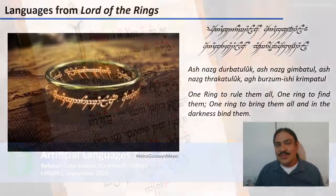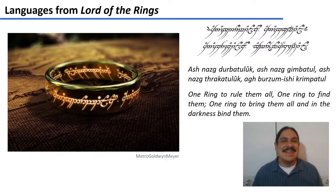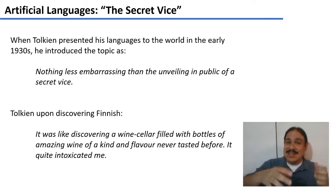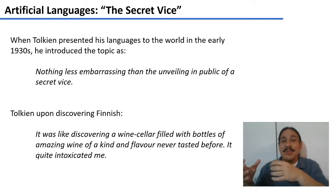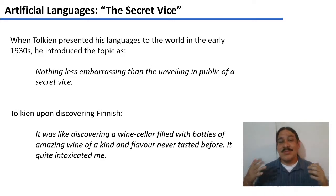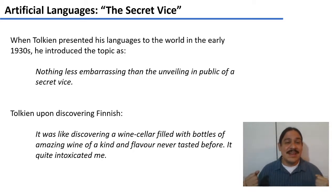I'll show you an example of an artificial or constructed language. 'One ring to rule them all' — by famous nerd J.R.R. Tolkien. Fun fact about Lord of the Rings: Tolkien made the languages first and only then did he design the world so that there would be a place for his languages to exist. He was a bit embarrassed by it, and when he finally revealed the languages in the 1930s he said it was 'nothing less embarrassing than the unveiling in public of a secret vice.' He loved the art of inventing languages, and in particular he loved Finnish. He liked the way it sounded and said it was like discovering 'a wine cellar filled with bottles of amazing wine of a kind and flavor never tasted before.' 'It quite intoxicated me.'